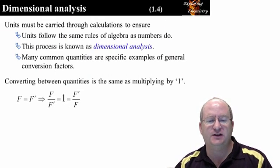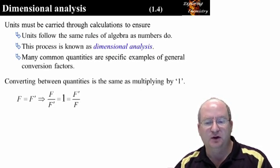Formally, what we just did is called dimensional analysis, and here is the underlying mathematics. We have two things that are equal: F equals F prime. We can rearrange these into two fractions that are both equal to 1. Converting between different units is the same as multiplying through by 1.